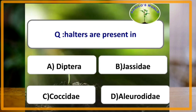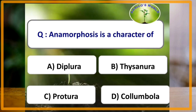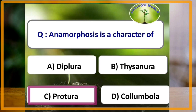Halteres are present in which of the following order? The answer is Diptera. Anamorphosis is a character of which of the following order? The answer is Protura. In the order Protura, the larval development is anamorphic.